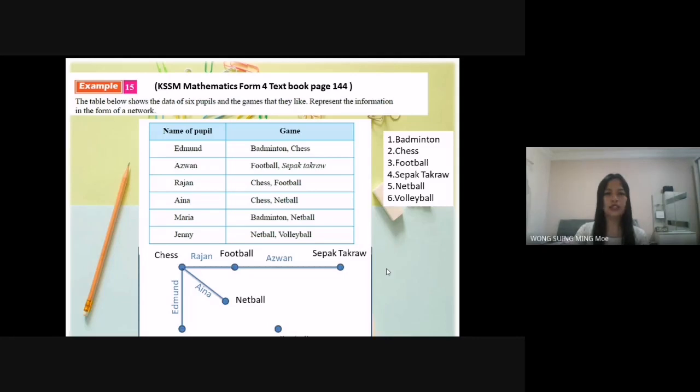Maria likes to play chess and netball. So we draw a line from badminton to netball and label it Maria. Last one, Jenny likes to play netball and volleyball. So draw a line from netball to volleyball and label it as Jenny. So this is a simple undirected graph.